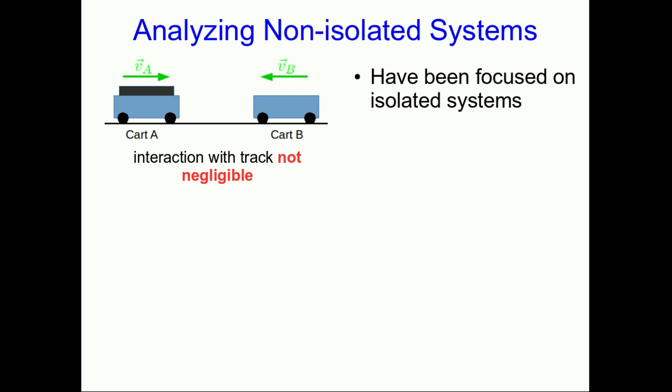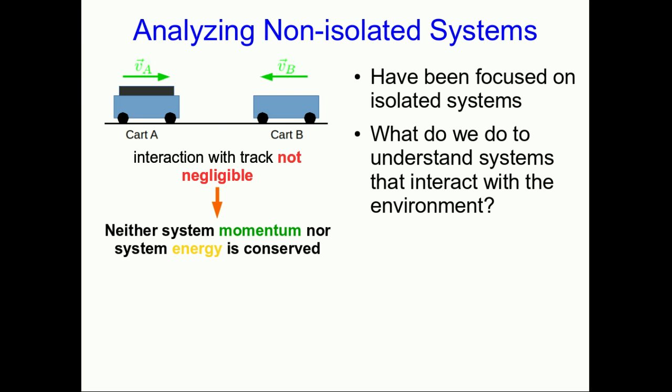What if the interaction with the track is not negligible? What if our system isn't isolated? In that case momentum isn't conserved and also the interaction with the track is going to tend to cause state changes in the environment like warming of the track, and so the system energy will not be conserved. And so we don't have any equations to work with. What do we do to understand systems that are interacting with their environments?